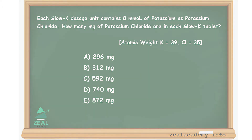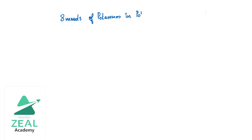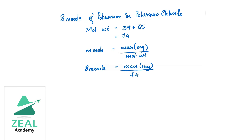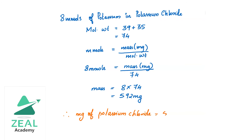There are 8 millimoles of potassium in potassium chloride. The total molecular weight of potassium chloride is 74. We know that millimoles equals mass in milligrams divided by molecular weight, so 8 millimoles equals mass divided by 74. Hence, mass equals 8 multiplied by 74, which gives 592 milligrams. Therefore, the correct answer is option C: 592 milligrams.